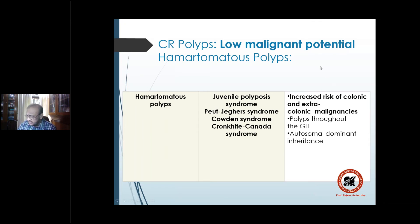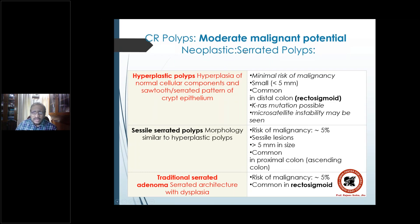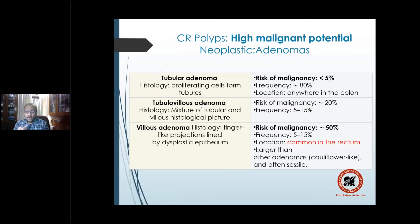The key figures to remember for adenoma malignant potential are 10, 20, 40. The villous adenoma is most commonly located in the rectum, is larger than other adenomas, cauliflower-like, and often sessile. The difference between tubular, tubulovillous, and villous is the amount of dysplastic villous epithelium: less than 20%, 20–80%, and more than 80%, respectively.